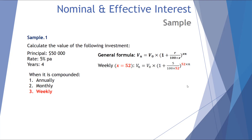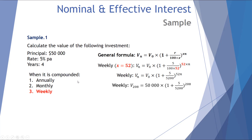Let's look at weekly. Weekly has x = 52, for 52 weeks in a year. The equation becomes (1 + 5/5200)^(52n). 52 weeks × 4 years gives 208 weeks. Our interest rate and number of terms are both expressed in weeks, giving a return of $61,064.27 — an even better return.